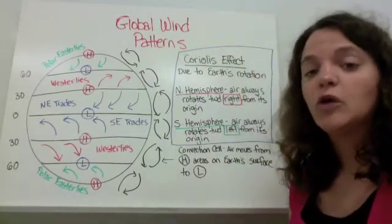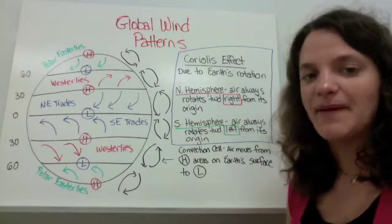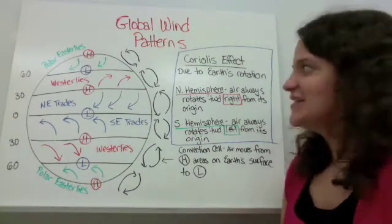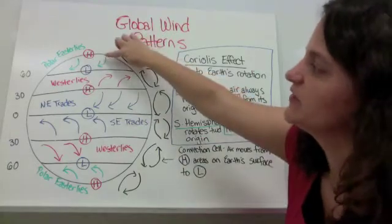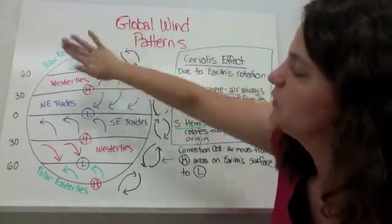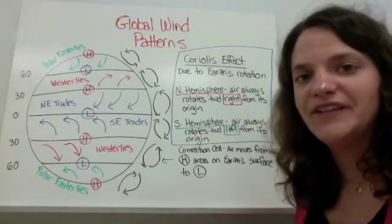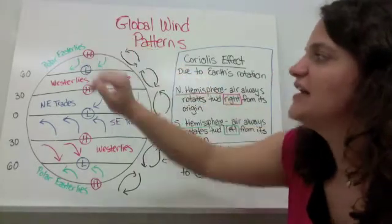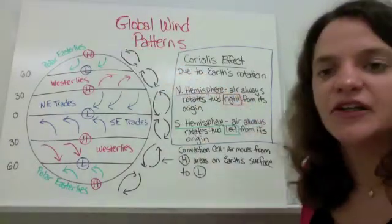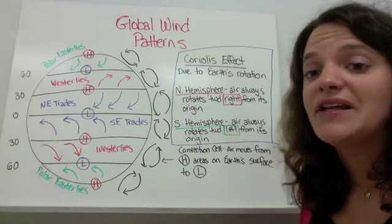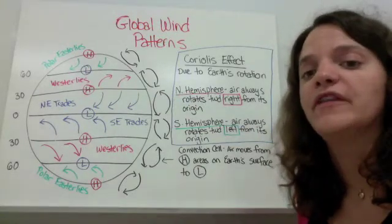You also need to be familiar with the global patterns of wind on Earth. In the northern hemisphere, air always rotates toward the right from its origin due to the Coriolis effect. Air always moves from high pressure to low pressure areas. From the North Pole to about 60 degrees north latitude, we have consistent winds called the polar easterlies. Winds are always named for the direction they blow from, or the direction of their origin.